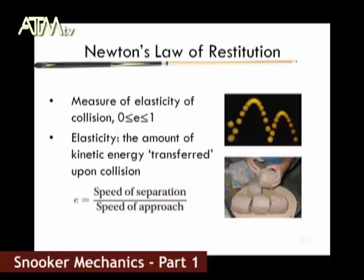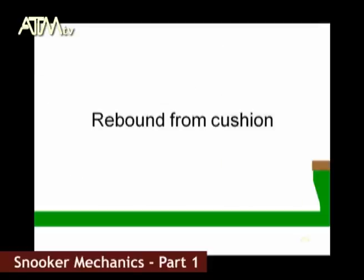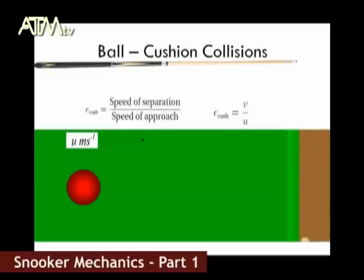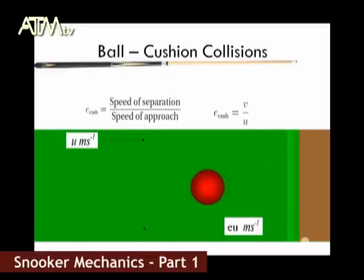An example of this would be throwing a piece of clay onto the floor. The clay would stick to the floor and not bounce back or move, meaning all its kinetic energy has been transferred into other means. Now let's look at a straight-on ball collision with the cushion. If the ball approaches the cushion straight on with a speed of U meters per second, then according to our coefficient of restitution equation, the rebound velocity V would be E times U meters per second.